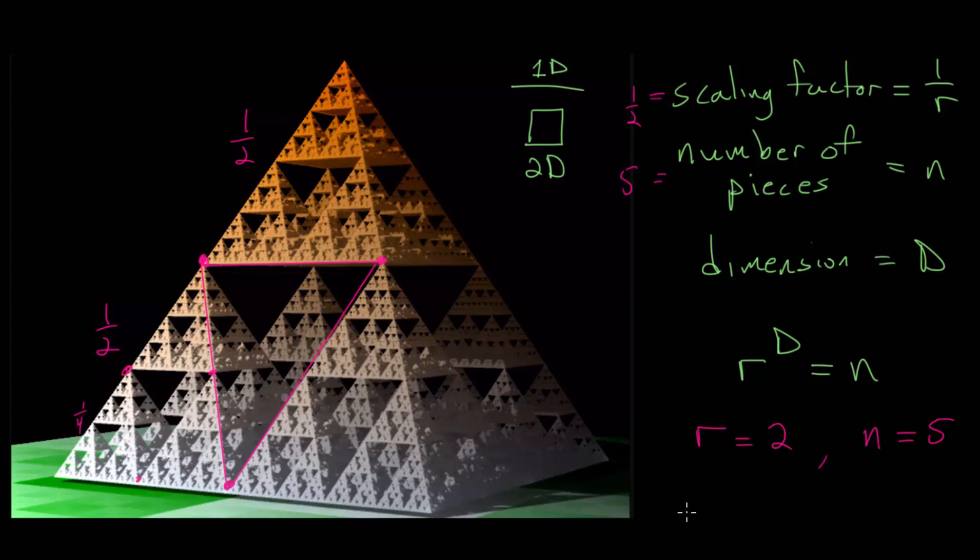We have that two to the d power is equal to five, and this just becomes a question asking, what power would we raise two to to get five? And this can be rewritten as a logarithm.